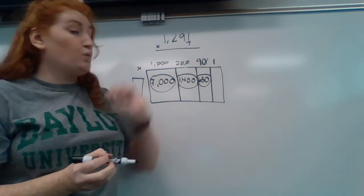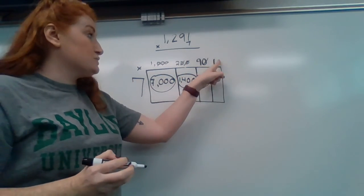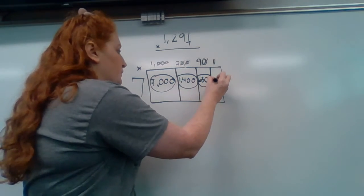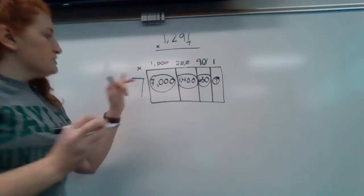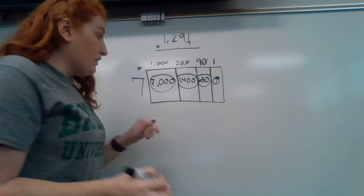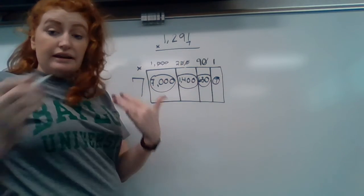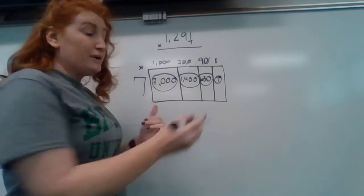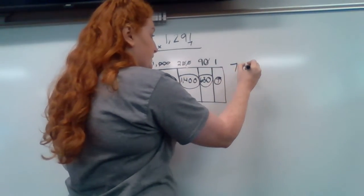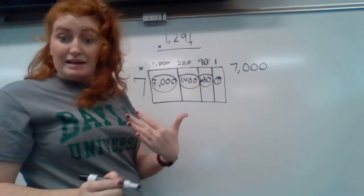And the last one, there's a one in the ones place. So that means it is one times seven, which is seven. So now I have to take my four numbers that I figured out, and I have to add them together. And again, it is so important that we are lining these up as neatly as possible.